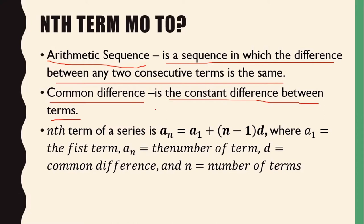To find the nth term of an arithmetic sequence, we have the formula: a sub n, which is the nth term, equals a sub 1, which is the first term, plus the quantity of n minus 1 times d, which is the common difference. Again, a sub 1 is the first term, a sub n is the term to find, d is the common difference, and n is the number of terms.